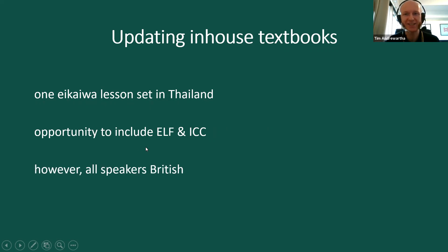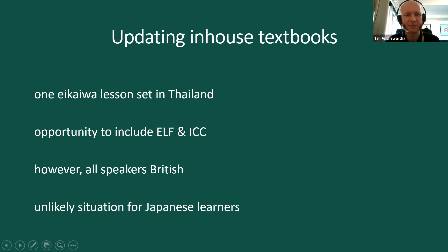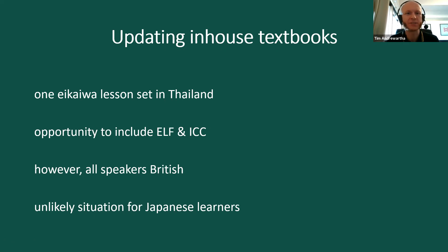At the eikaiwa school where I used to teach, they made their own textbooks. In an upper intermediate textbook there was a lesson set in Thailand — a great opportunity to show intercultural communication and English as a lingua franca. However, all the speakers in the recording were British. The context was two British people on holiday in Thailand visiting two other British people, discussing what to do on their last night, talking as they would back in the UK. This seems an unlikely situation for Japanese learners visiting Thailand — it would be more likely they'd be interacting with people from different countries and the expanding circle. But native speakerism is a big selling point, which is probably why they did that.